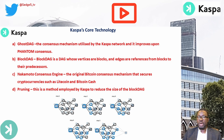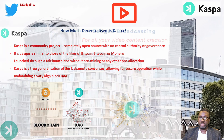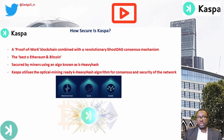As part of our review, we apply our 13-element DYOR toolkit. Starting with decentralization: Casper is a community project, completely open-source with no central authority or governance — similar to the ethos of Bitcoin, Litecoin, or Monero. Launched through a fair launch with no pre-mining or pre-allocation, Casper is a true generalization of the Nakamoto consensus, allowing for secure operation while maintaining a very high block rate.